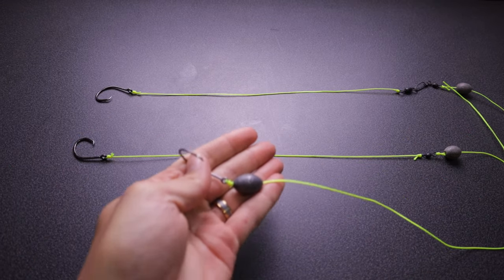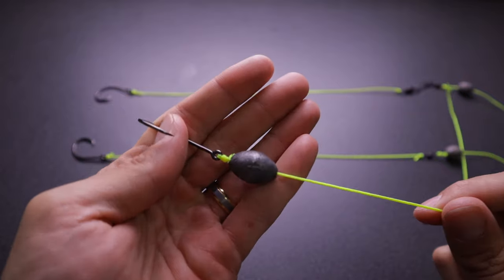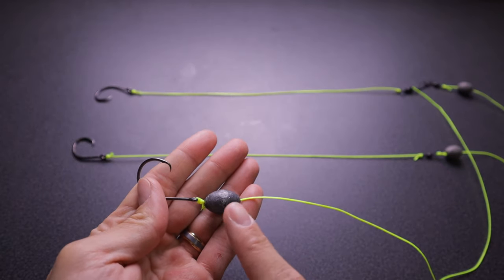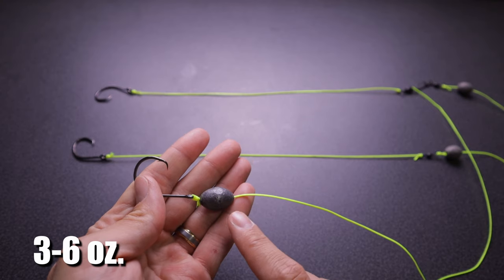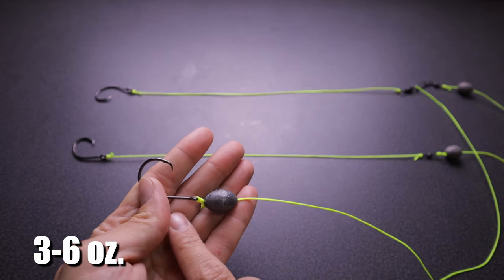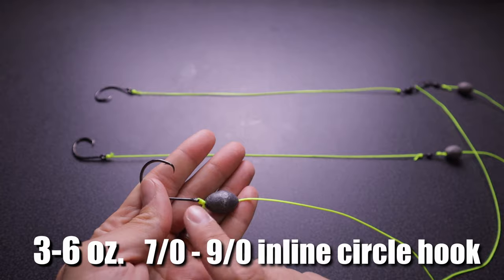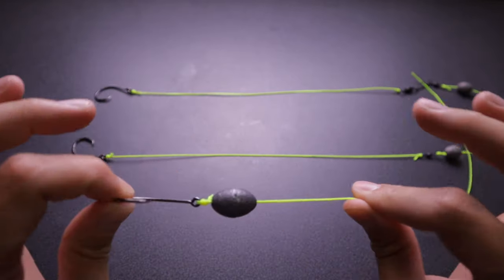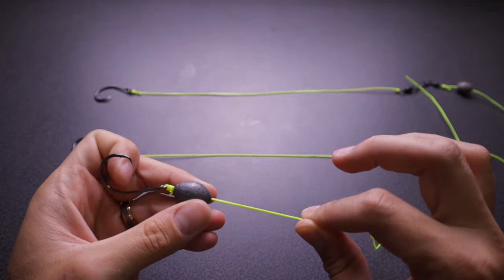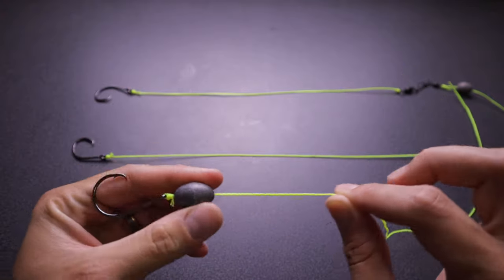Starting off, the easiest rig by far is the good old knocker rig. It's just a simple three to six ounce weight depending on your depth and current on the main line tied to a seven to nine aught circle hook. It's a super easy rig, one of the easiest you'll ever use.